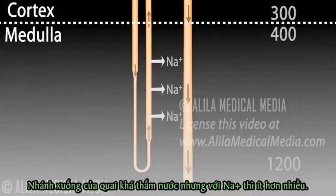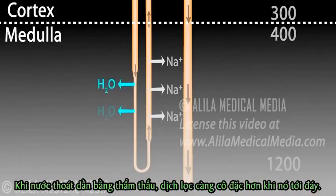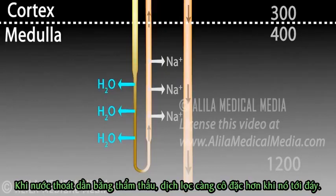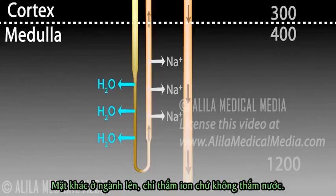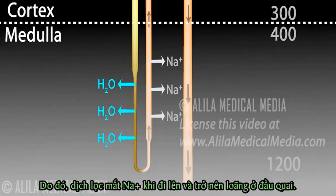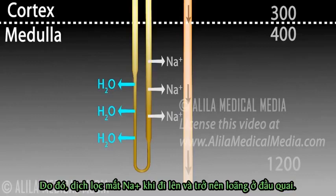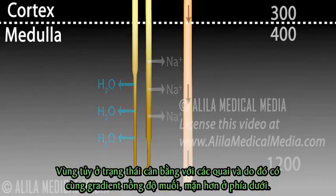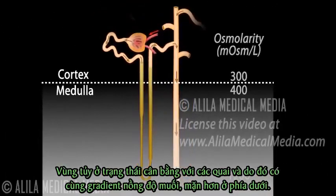The descending limb of the loop is permeable to water but much less so to sodium. As water exits the tubule by osmosis, the filtrate gets more and more concentrated as it reaches the bottom. The ascending limb, on the other hand, is permeable to ions but not water. As a result, the filtrate loses sodium as it goes up and becomes more diluted at the top of the loop. The medulla is in equilibrium with the loop and hence has the same salinity gradient — more salt at the bottom.